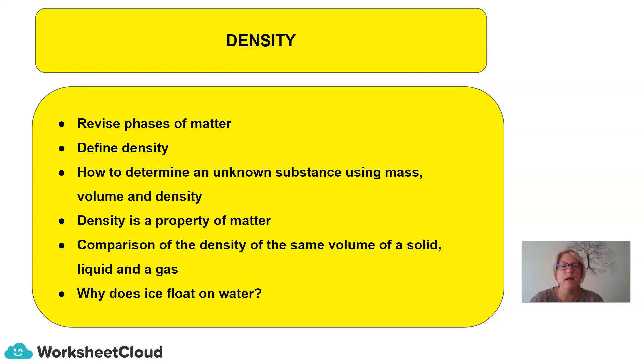Hopefully, you'll understand density a little bit better. How do we determine an unknown substance using mass, volume, and density? Density is a property of matter. We're going to compare the density of the volume of a solid, a liquid, and a gas. And lastly, we might look at how does ice float on water, and we might be able to answer that question.